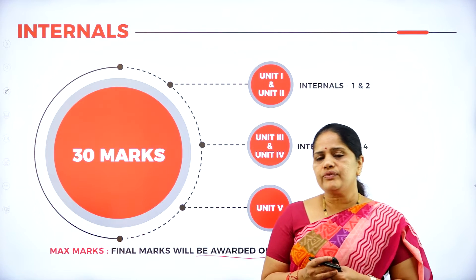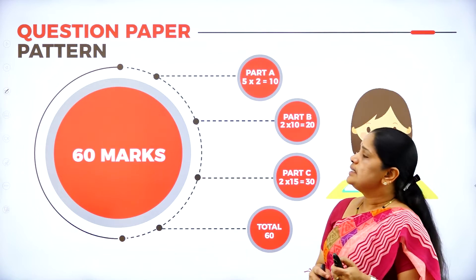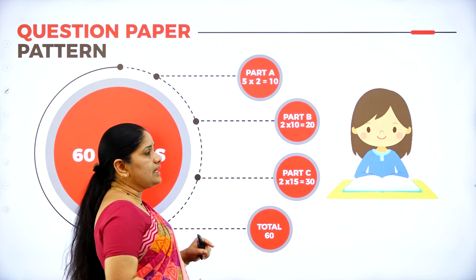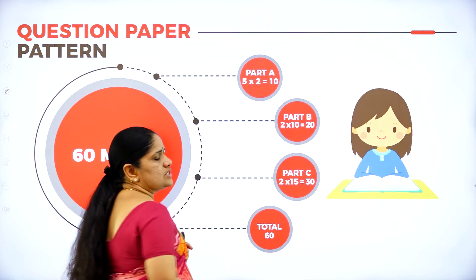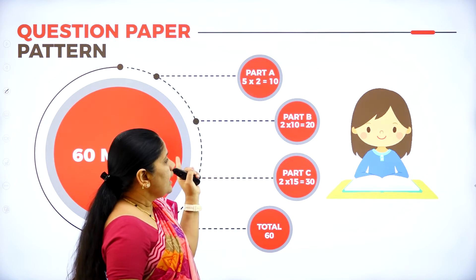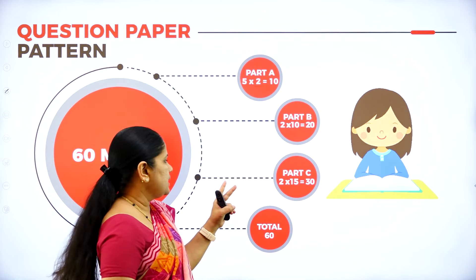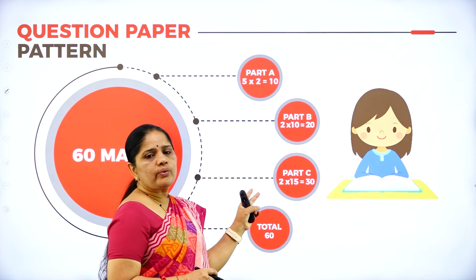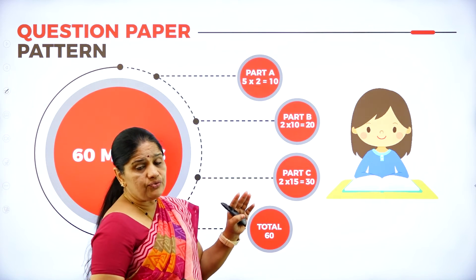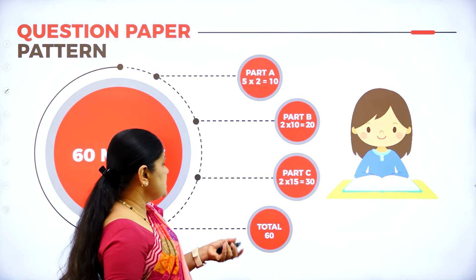Let us have a discussion on the question paper pattern. Part A comprises 6 questions of 2 marks each, out of which the student has to answer any 5. In Part B, there are 4 questions of 10 marks each and the student has to answer only 2. In Part C, there are 2 questions of 15 marks each, out of 4 questions, and the student has to answer 2. The total for the exam is 60 marks.